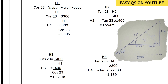We are calculating the struts, ties, tie beam, and king post using the triangle drawn on screen. H1 is the length of the rafter, H2 is the length of the tie, H3 is the length of the struts, and H4 is the length of the king post.